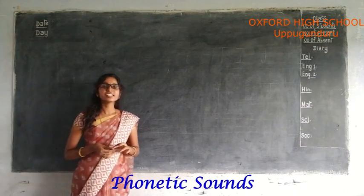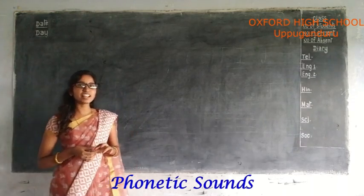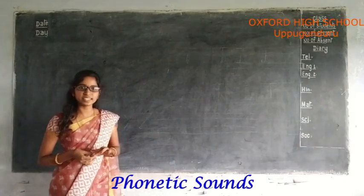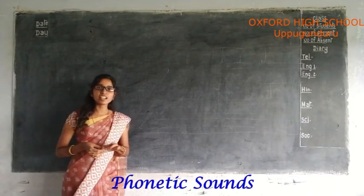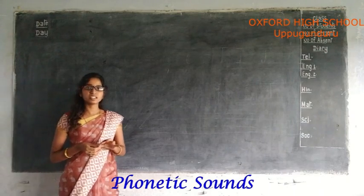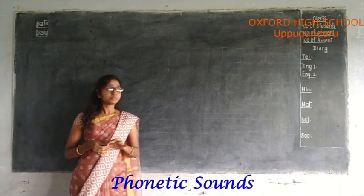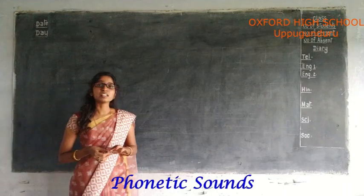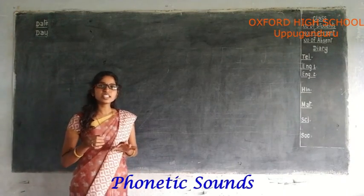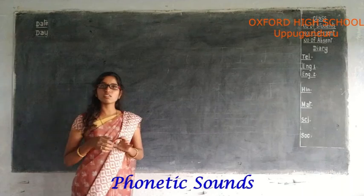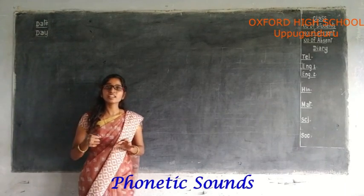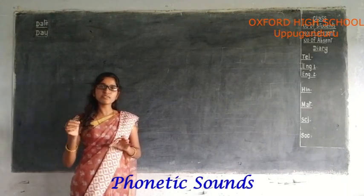Hello children. In previous class, we learned alphabets and how to write. In this class, we will learn how to pronounce the alphabets. Alphabets are A to Z. These 26 letters have their own sounds, and each letter produces different types of sounds.